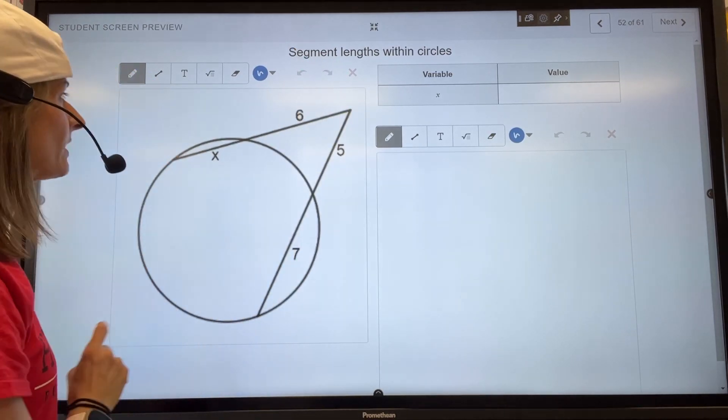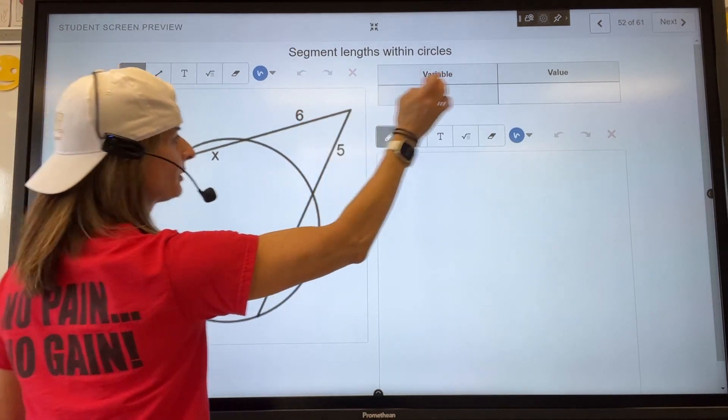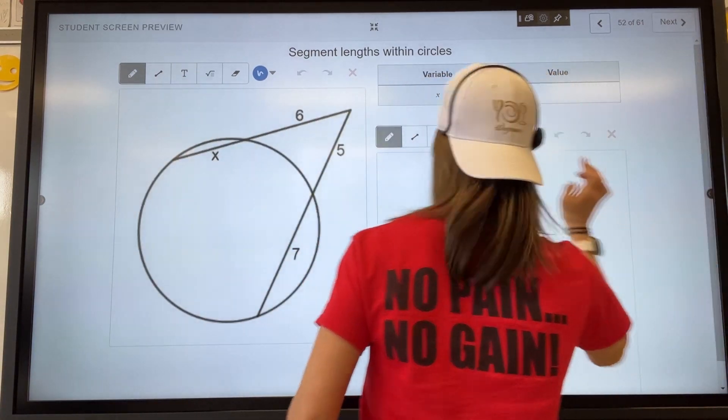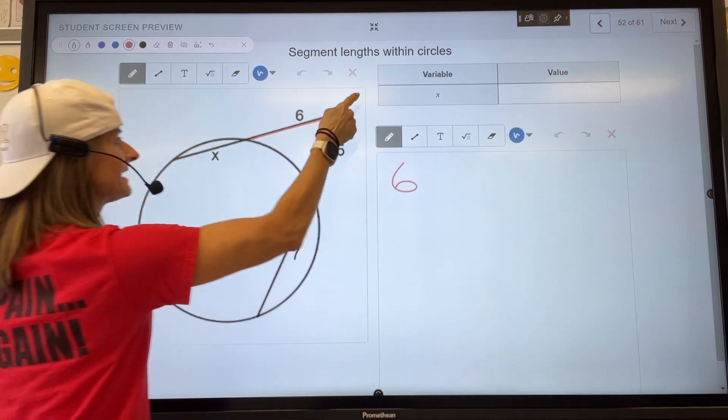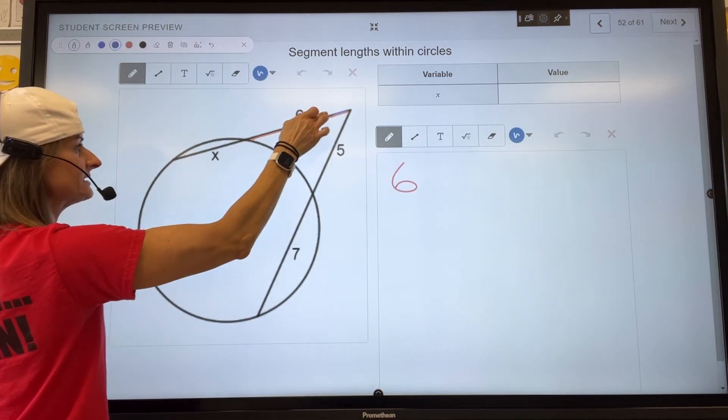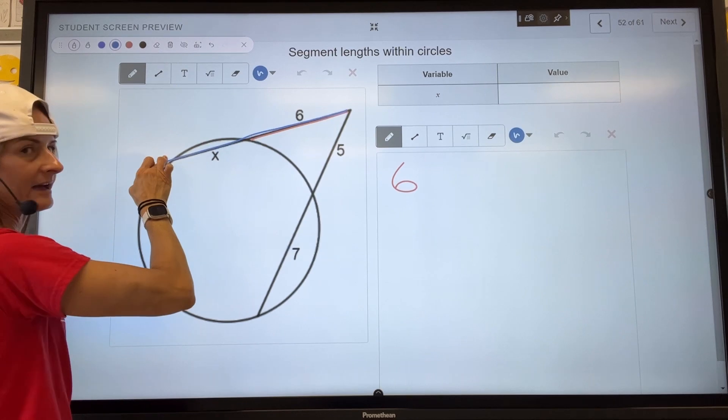Because this one is the exterior part of the segment, which is 6, times the entire length of this segment, which is 6 plus x.